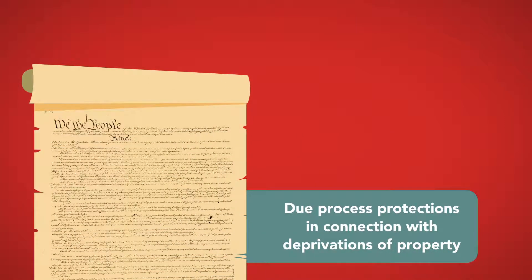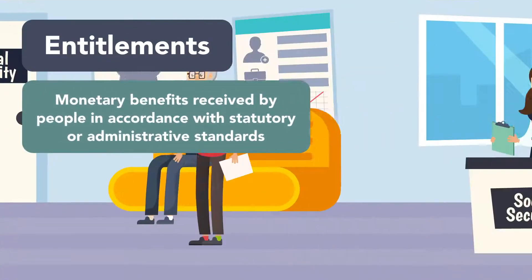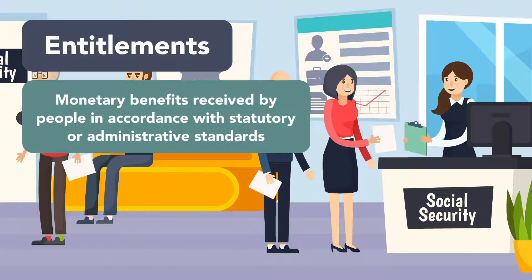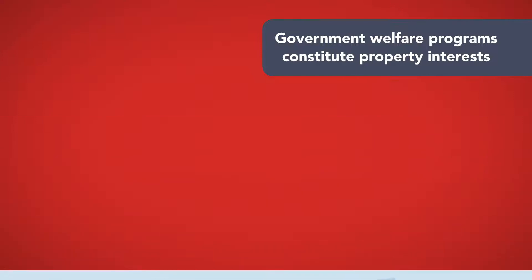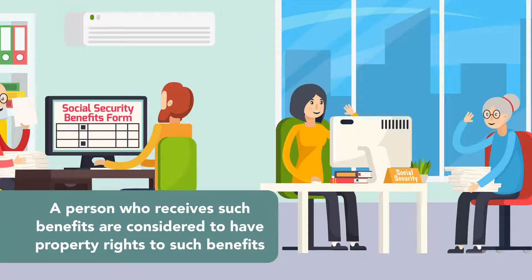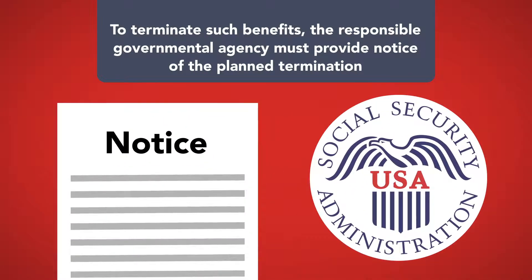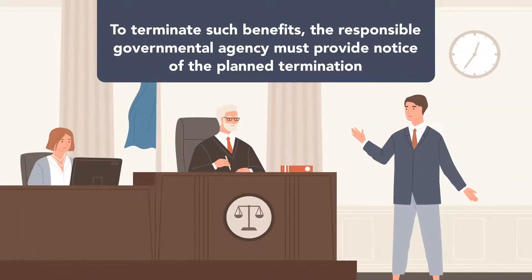In the context of administrative law, the most relevant constitutional due process protections in connection with deprivations of property stem from denial or revocation of government entitlements. Entitlements are monetary benefits received by people in accordance with statutory or administrative standards. Government welfare programs, such as those for needy families or supplemental nutrition assistance, constitute property interests. As such, a person who receives such benefits because they meet eligibility criteria defined by law or agency rule are considered to have property rights to such benefits. To terminate such benefits, the responsible governmental agency must provide notice of the planned termination and hold a hearing prior to terminating the benefits.